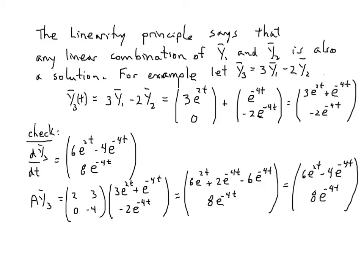When matrix A multiplies y3, row times column: 2 times this gives 6e to the 2t and 2e to the minus 4t. The 3 multiplies this term, giving negative 6e to the minus 4t. This row gives 0 times this and minus 4 times this, yielding 8e to the minus 4t. The 2e to the minus 4t terms combine to negative 4e to the minus 4t.